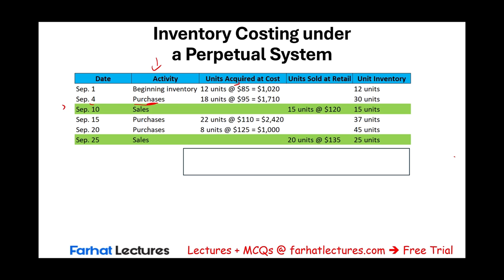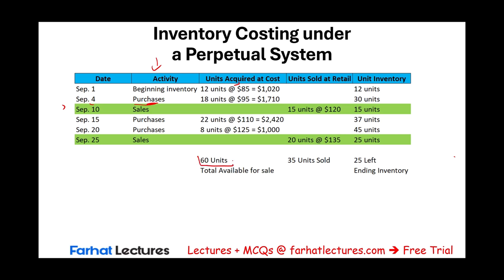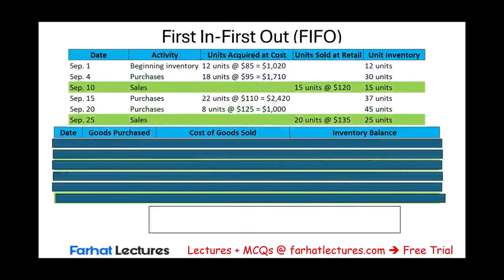All in all, we started with 12 plus 18 plus 22 plus 8 — 60 units available for sale. Of those 60 units, we sold 35. What's left is 25. In the real world you would count what you have left: 60 available minus 25 remaining means 35 units were sold. I am going to illustrate the concept first using the FIFO method, determining what ending inventory and cost of goods sold will be.